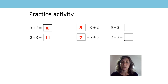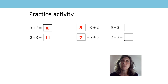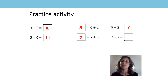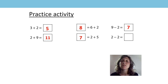I've got subtracting now. Subtracting 2 from an odd number gives the previous odd number, so the odd number before 9 is 7. Now I've got an even number but I've got 2 subtract 2, so that's going to give me 0.